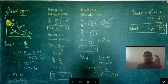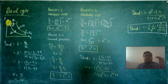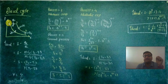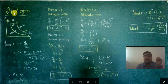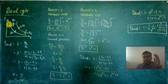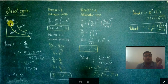Process 1 to 2 is the compression process: the piston moves from the bottom dead center to the top dead center in order to compress the air present inside. This is the diesel cycle. During the compression process, only air is present — there is no fuel. In contrast, in the petrol cycle, both air and fuel are present.